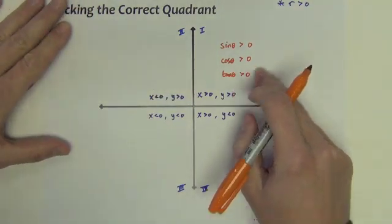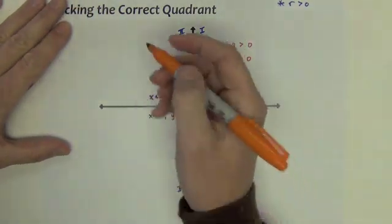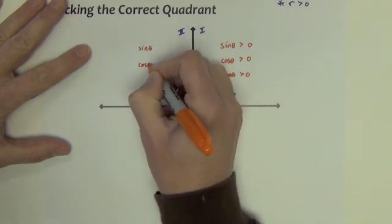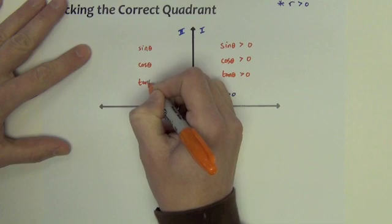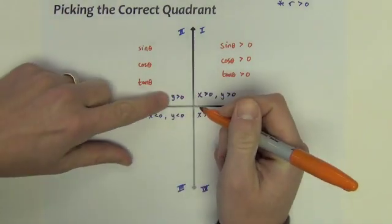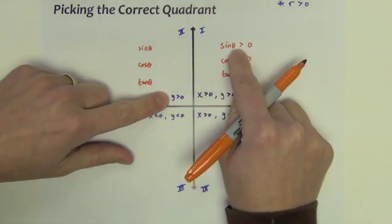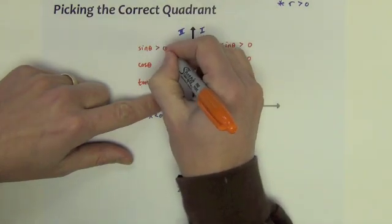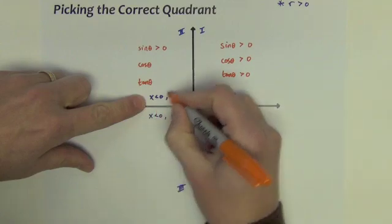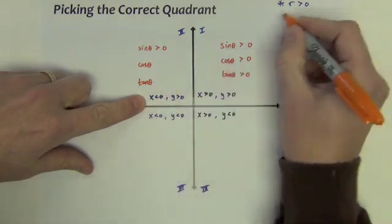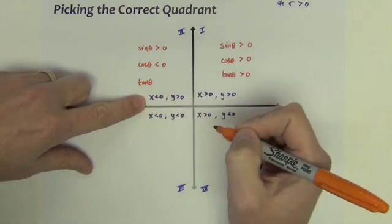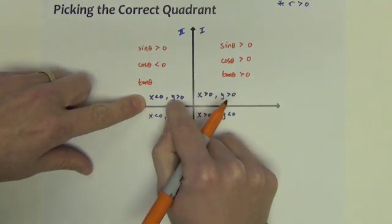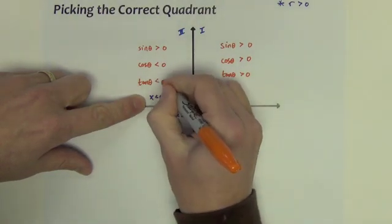So in quadrant 1, all trig functions are positive. In quadrant 2: sine is y divided by r, two positives, so it's positive. Cosine is x divided by r — a negative number divided by a positive — so cosine is negative. Tangent is y over x, which is positive over negative, so that's negative.